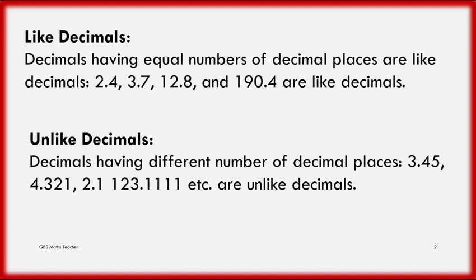Can you read about like decimals? Decimals having equal numbers of decimal places are like decimals. For example, 2.4, 3.7, 12.8 and 190.4 are like decimals. Did you get the meaning of this?